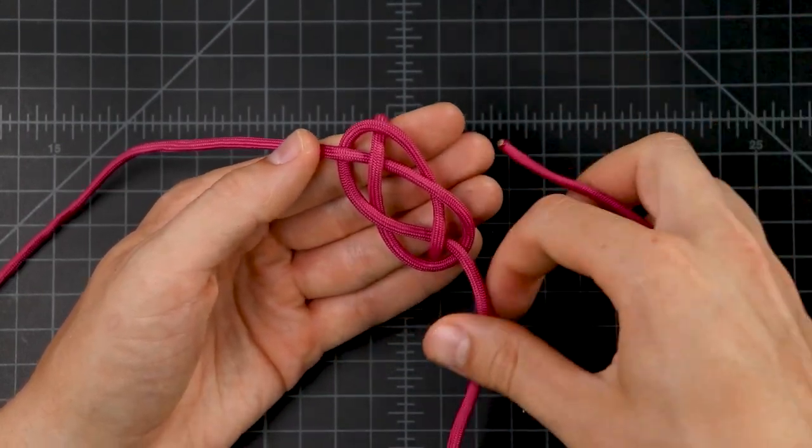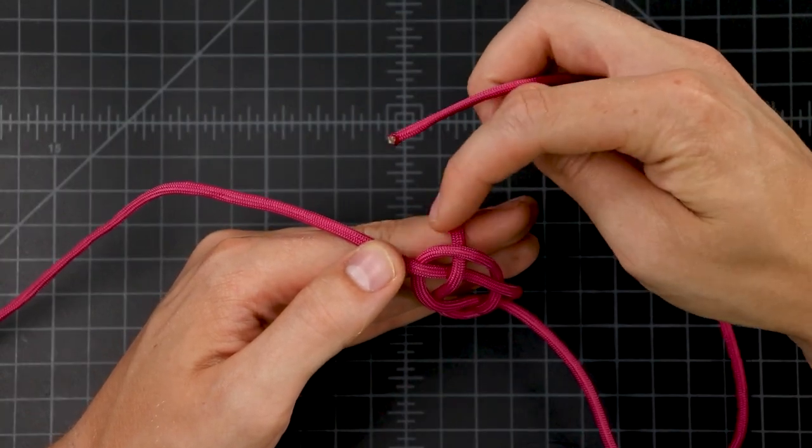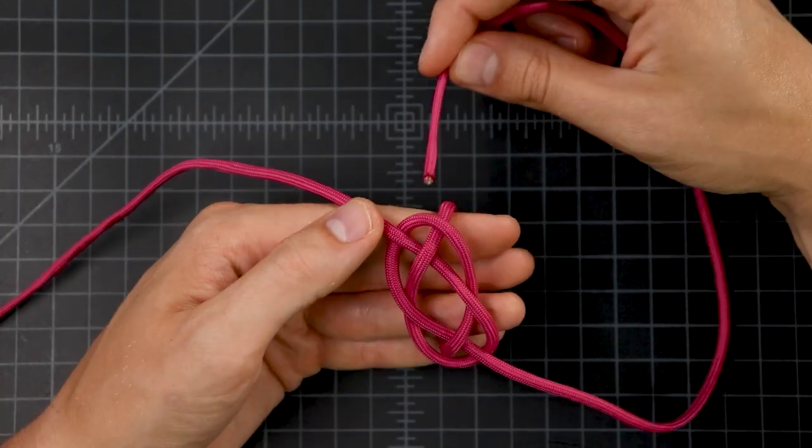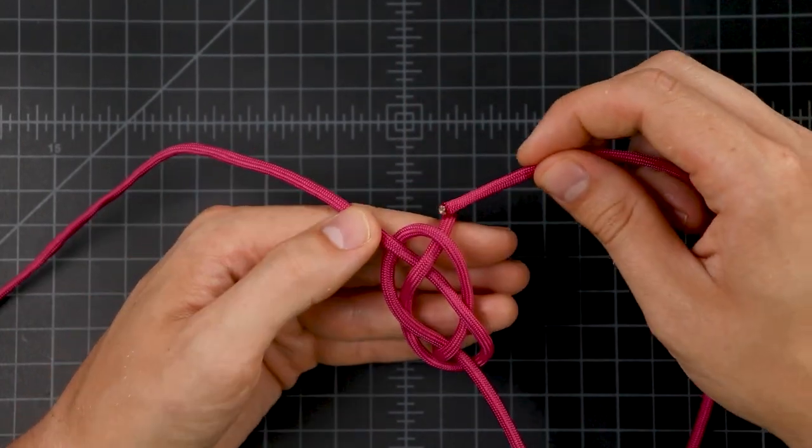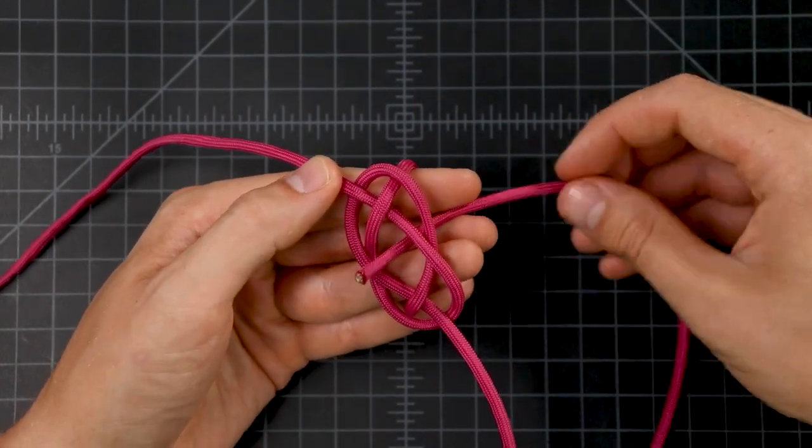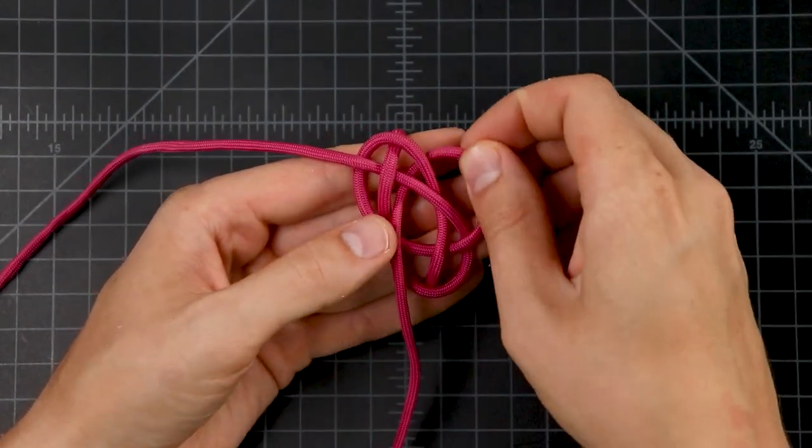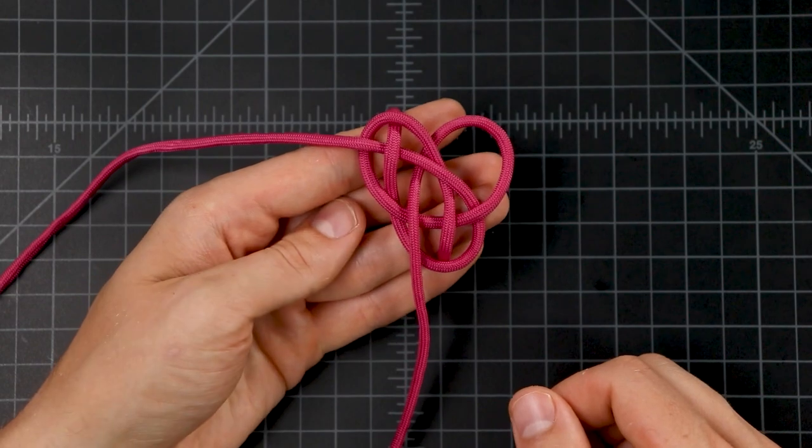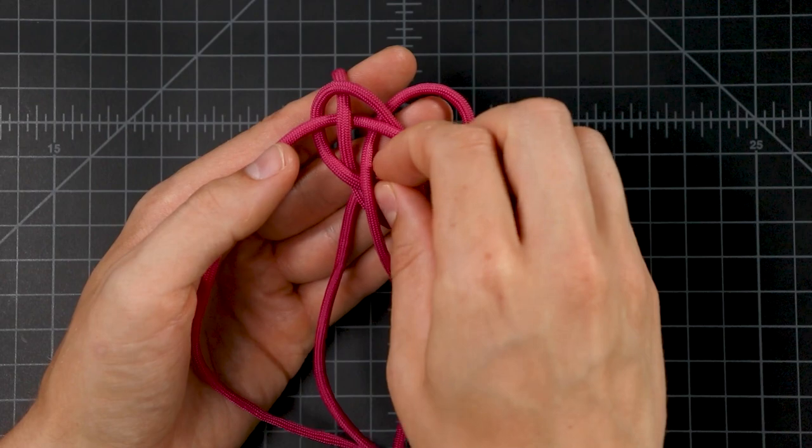For the normal diamond knot, we would take this cord here and bring it past this ring that goes around my fingers and go up through the middle, but for this version of it, we're going to skip that step and just go straight up the middle. And we'll leave kind of a clover leaf or petal right there. Do the same thing with the other side, bring that cord straight up through the middle of the knot.